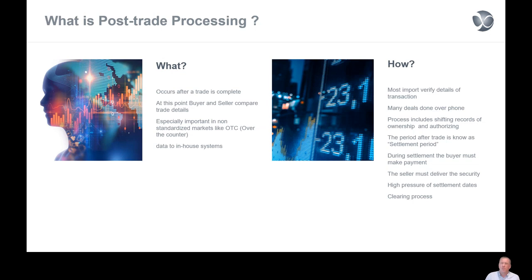What is actually trade processing? Trade processing occurs after a trade is complete. At this point the buyer and the seller compare trade details — especially important in non-standard markets like OTCs. Data going to in-house systems is also important because data is not standardized and not harmonized. We verify details of the transactions; many deals are done over firm still. The process includes shifting records of ownership. The period after the trade is known as the settlement period. During the settlement period, the buyer must make the payments and the seller must deliver the security. There is high pressure of settlement dates in these clearing processes, which will then result in penalties under the CSDR regime.